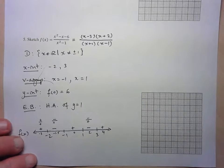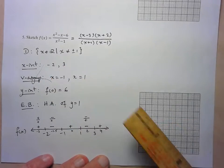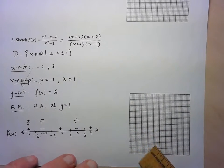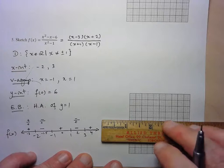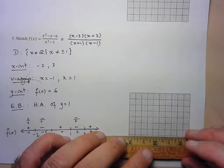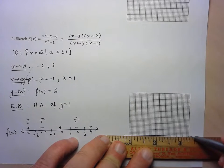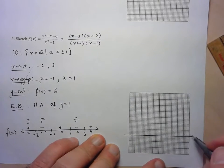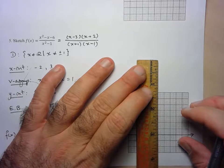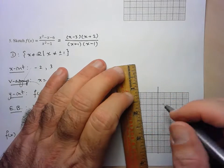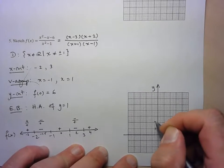Now we go to sketching the graph, starting with structure. My x-intercepts range from -2 to 3, so going up and down by one is reasonable. I have a horizontal asymptote at y = 1 and a y-intercept at 6, so I'll bring the y-axis down far enough to show six units. I'll center the axes since I need about the same distance in each direction.